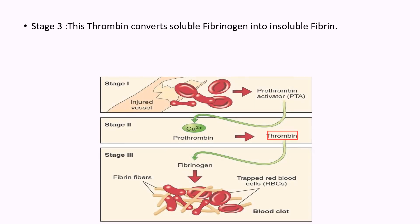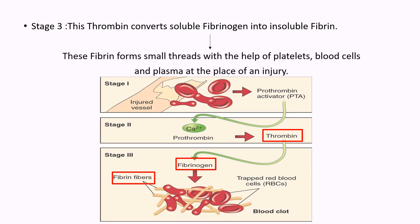During the third stage, thrombin converts soluble fibrinogen into insoluble fibrin. These fibrin form small threads with the help of platelets, blood cells, and plasma at the place of an injury. This together forms a clot to cease the blood loss.